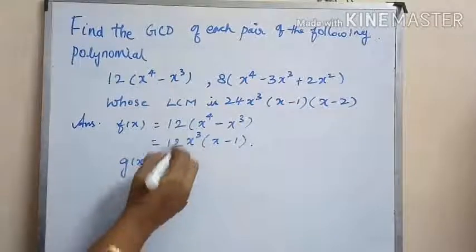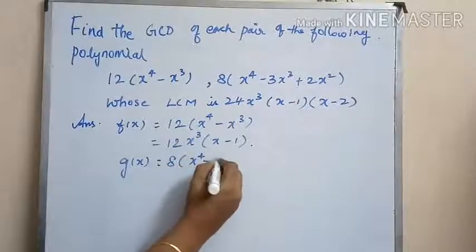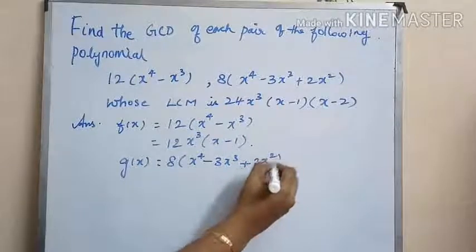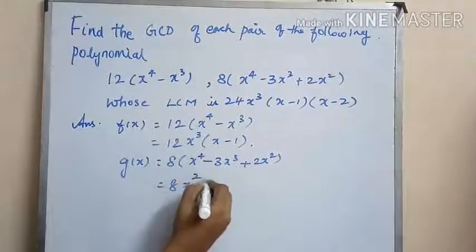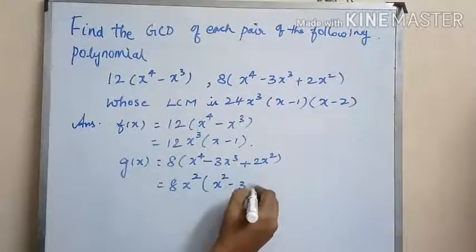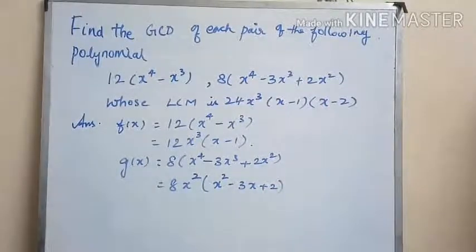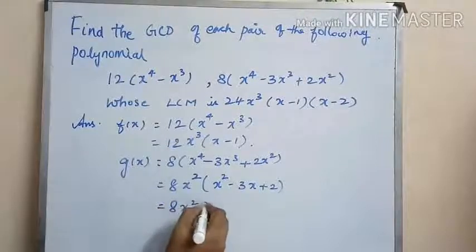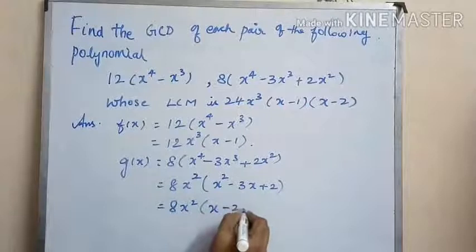g(x) is equal to 8 into x to the power 4 minus 3x cubed plus 2x squared. Here x squared is a common factor which can be brought out, so 8x squared into (x squared minus 3x plus 2), which can be factorized as 8x squared into (x minus 2) into (x minus 1).